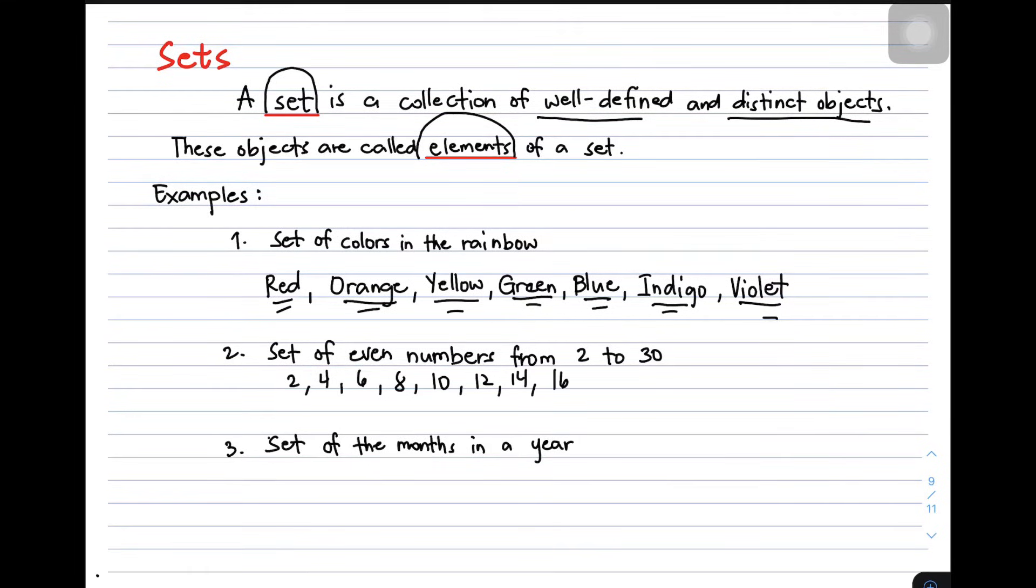16, 18, 20, 22, 24, 26, 28, and 30. These are the elements of the set of even numbers from 2 to 30.